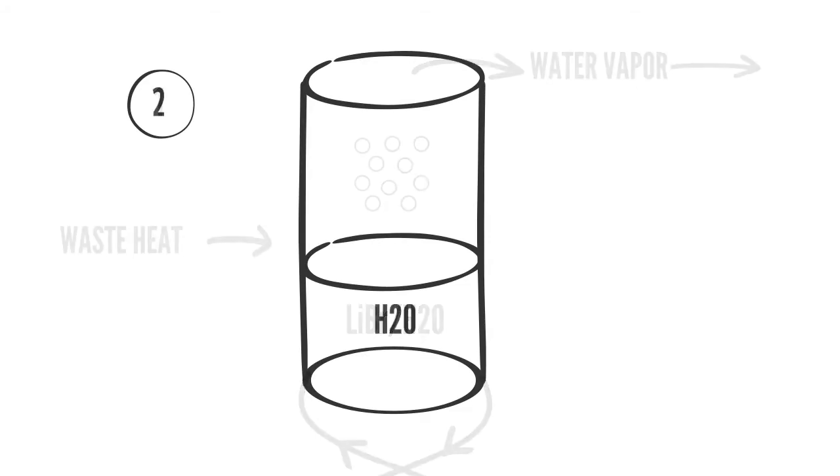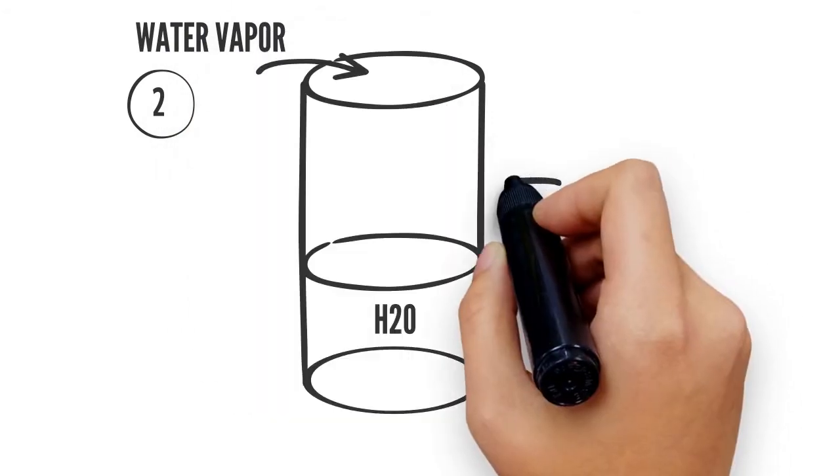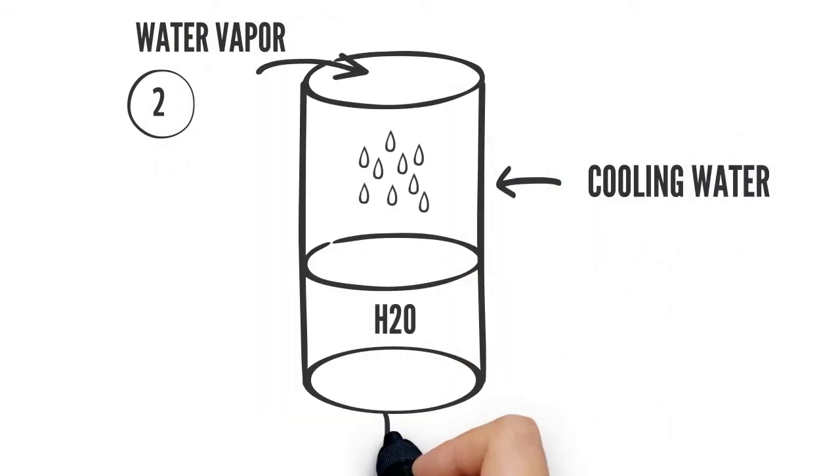The water vapor from the first phase flows into the second phase. Here the steam is condensed by an external cooling circuit.